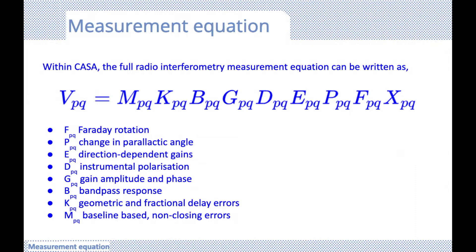Following that is the complex gain correction, the G matrix — a catch-all used to describe most of our amplitude and phase effects introduced by the actual antenna electronics, so a per-antenna gain and amplitude correction. Then we have bandpass, which describes the frequency dependence of the antenna electronics that we must correct for. And we have delay calibration — our geometric and fractional delay errors corrected with fringe rotation, which ensures we set the position of the target into the phase center of our observations.